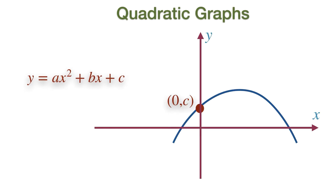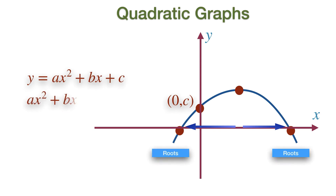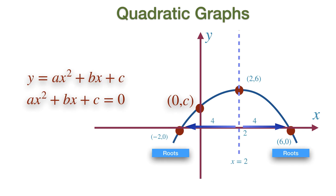As quadratic graphs are parabolic curves, the turning points are located exactly halfway between the X intercepts. The X intercept of the graph is also called the roots of the quadratic equation. This is the solution of the quadratic equation when the Y value is 0. If the coordinates of the X intercepts are, say, (-2, 0) and (6, 0), the X coordinate of the turning point will be exactly 2.